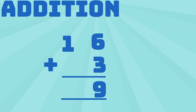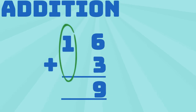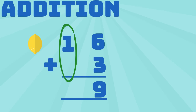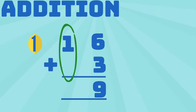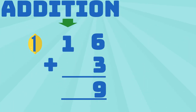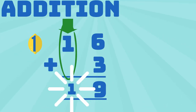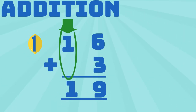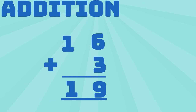Now let's calculate 1 plus 0. 1 lemon plus 0 equals 1 lemon. Therefore, 1 plus 0 equals 1. That means 16 plus 3 equals 19.